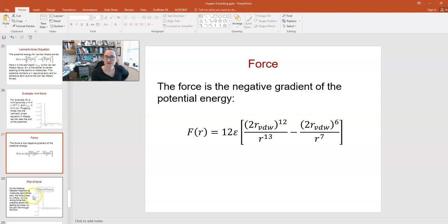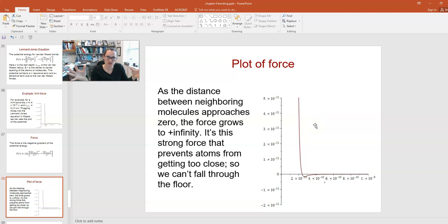I've also done in Maple a plot of the force here. You can see that as you start to shove those two atoms or molecules together, as R goes to zero, you have a very strong positive repulsive force. They're going to resist being shoved together. That force goes to positive infinity as you try to shove them tighter. It's this strong force that prevents atoms or molecules from getting too close to one another, and it's this force that prevents us from putting our hand through the wall or falling through the floor.